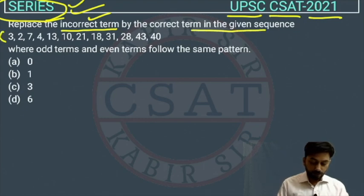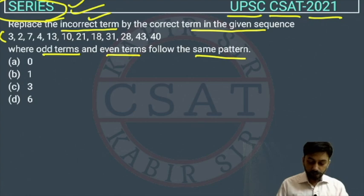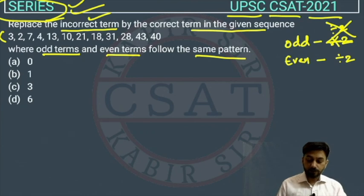The sequence is 3, 2, 7, 4, 13, 10, 21, 18, 31, 28, 43, 40, where odd term and even term follow the same pattern. Odd are those numbers which are not divisible by 2, and even are those numbers which are divisible by 2. These are not divisible by 2, so we will write like this.